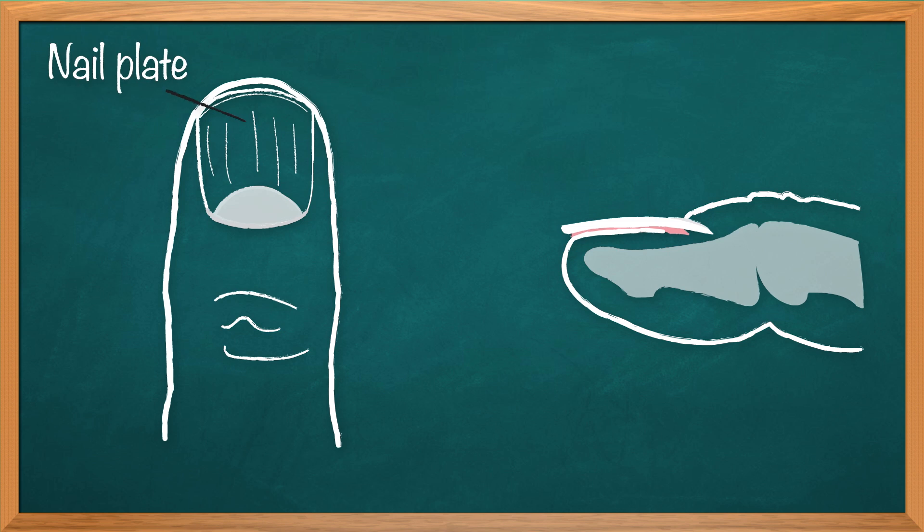So your fingernails have five parts to them. There's the nail plate, which is what you think of when you think fingernail. It's the visible part on top.